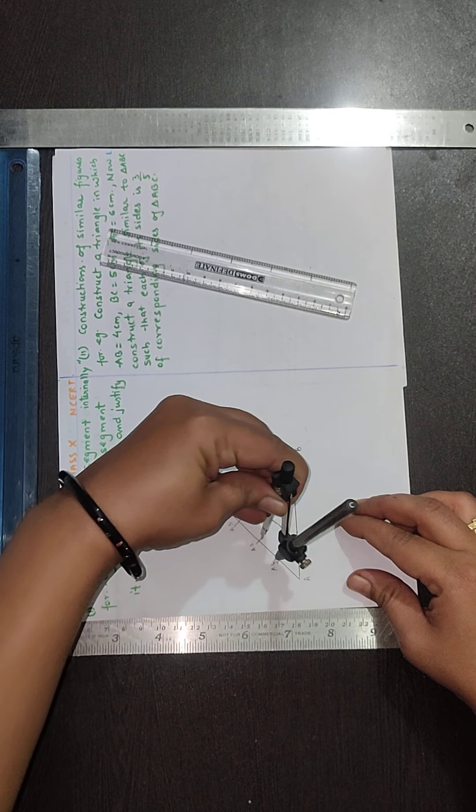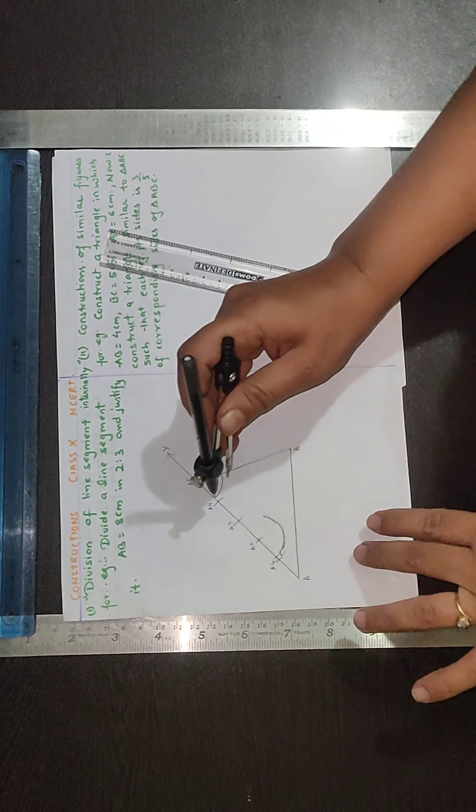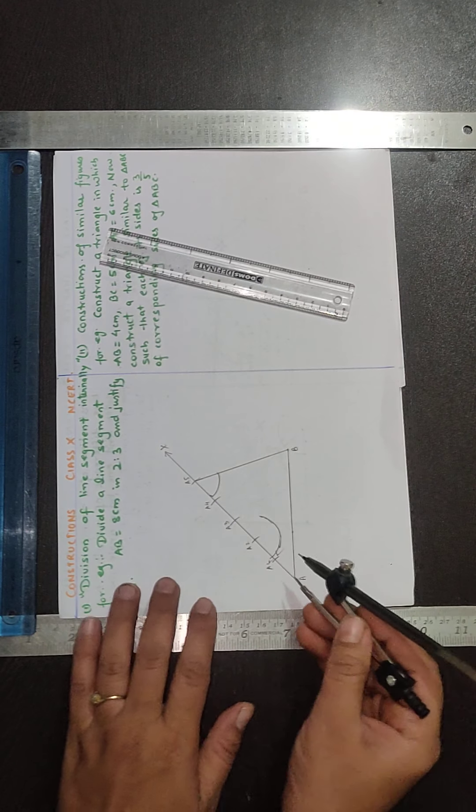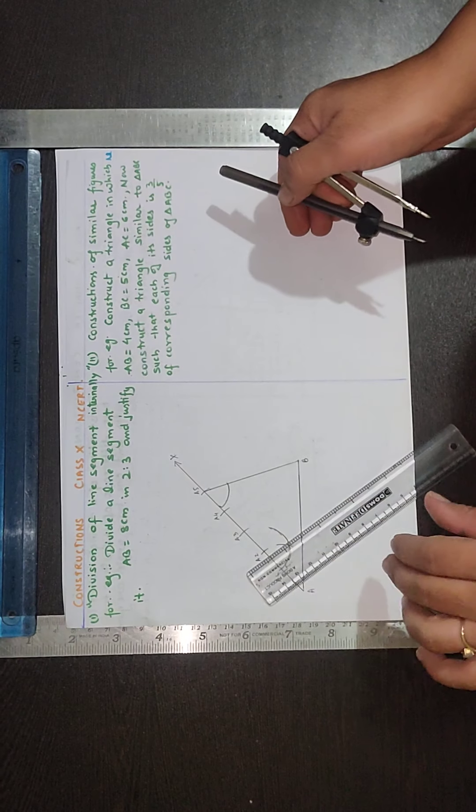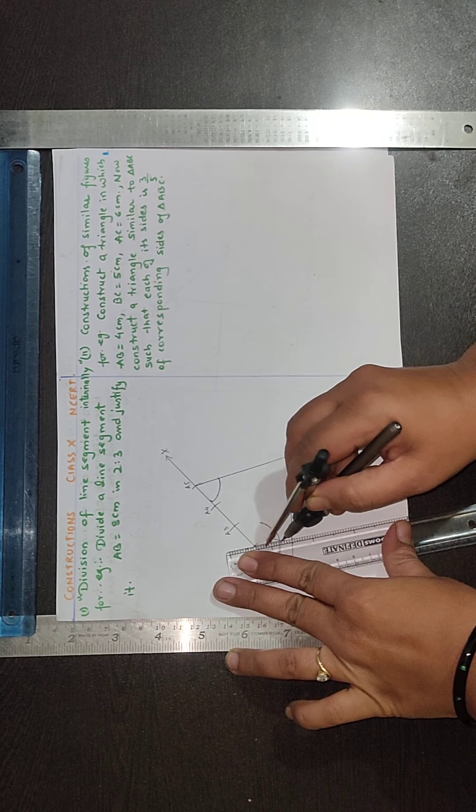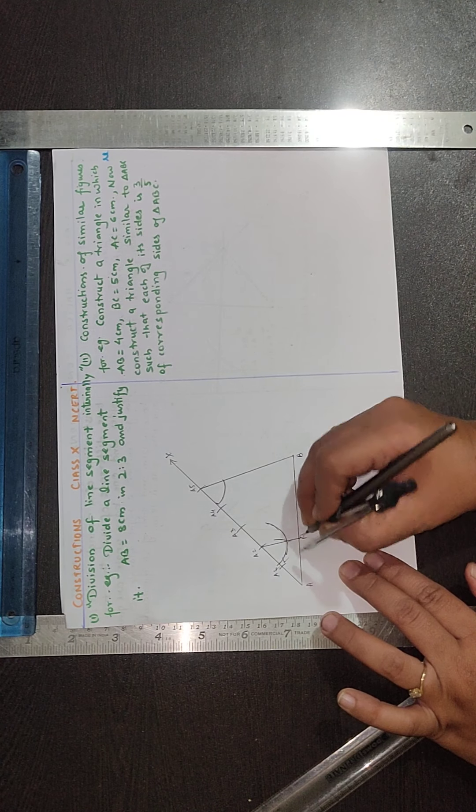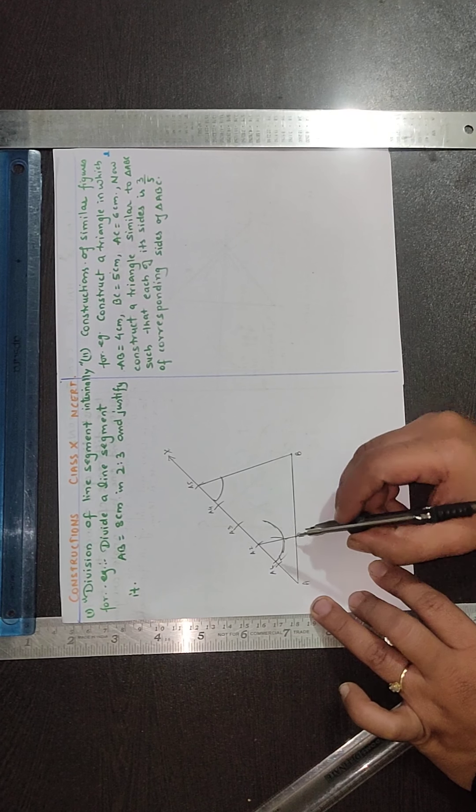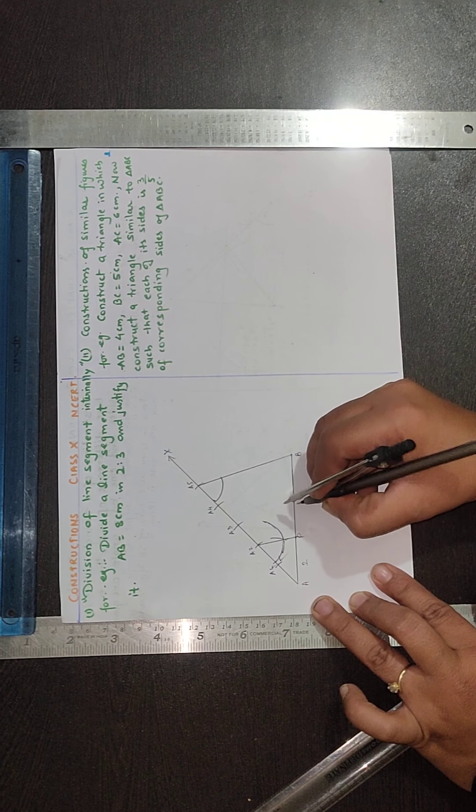Very carefully we need to do this. Then just take the dimension like this, measure and from this point you need to cut. Draw this line and this is parallel to this. Mark it as B. This A2B is parallel to A5B. So B is the required point which divides AB into 2 ratio 3.